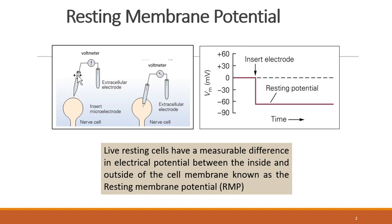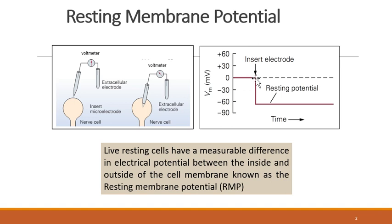Resting membrane potential was discovered when scientists were measuring potential using electrodes. On the outside of the cell, the extracellular surface showed zero potential. But when one electrode was placed outside and one was inserted into the cell, the potential deflected to the negative side. In the graph, membrane potential abruptly reduced to around minus 70 millivolts.